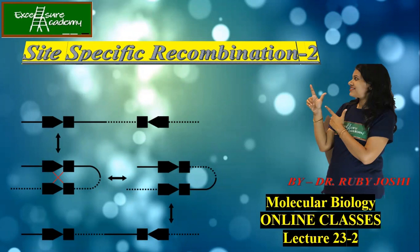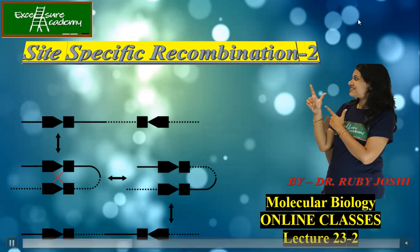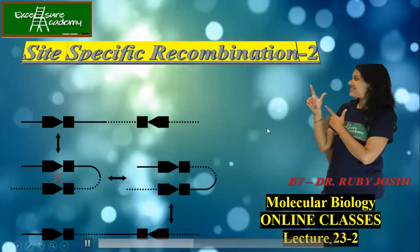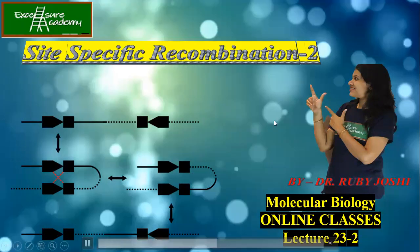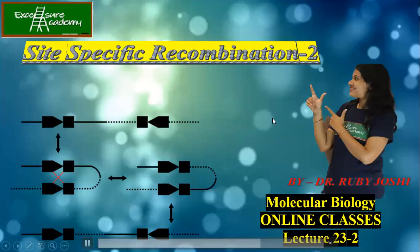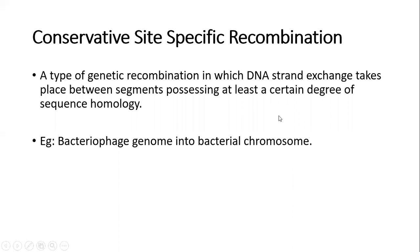So if you remember, there are two types of site-specific recombination (SSR): one is transpositional and one is conservative. Today in this lecture, we are going to discuss about the conservative site-specific recombination.